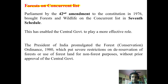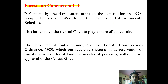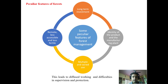By the 42nd amendment to the Constitution in 1976, forests were brought to the Concurrent List in the Seventh Schedule. This enabled the central government to play an effective role, as both state and center have a role in forest management. The President of India promulgated the Forest Conservation Ordinance, which put severe restrictions on the diversion of forest land for non-forestry purposes without the approval of the central government.